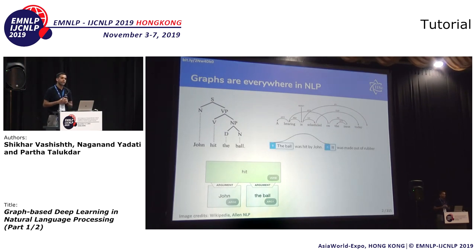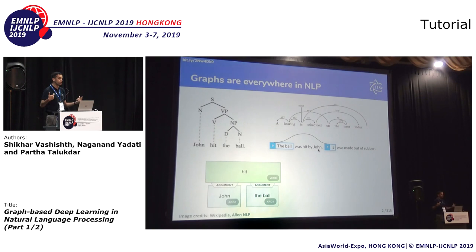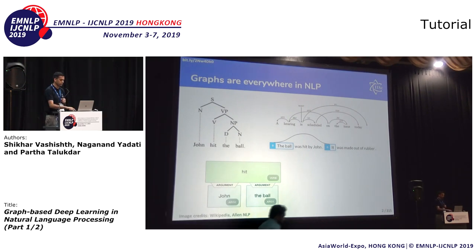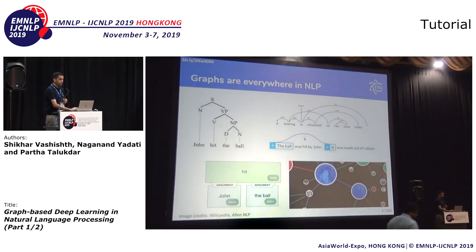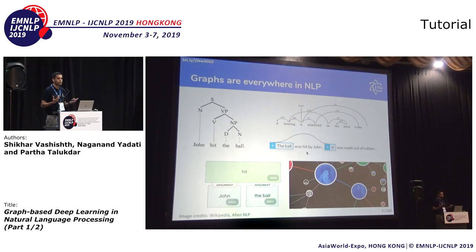But we could also have graphs in NLP which go beyond sentences. For example, for coreference resolution, you could have coreference within a sentence, but also across sentences. In this case, for the sentences 'the ball was hit by John' and 'it was made out of rubber,' we know that 'it' is referring to the ball. So again, we could have words or phrases as nodes in the graph, and the coreference links among them could be the edges. The first three graphs were at a sentence level, and we have the coreference graph at a document level.